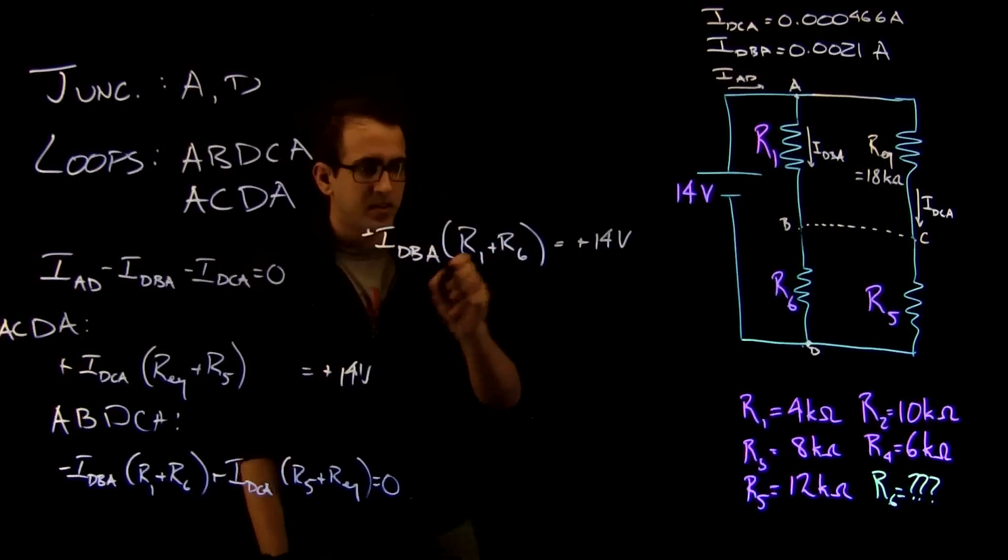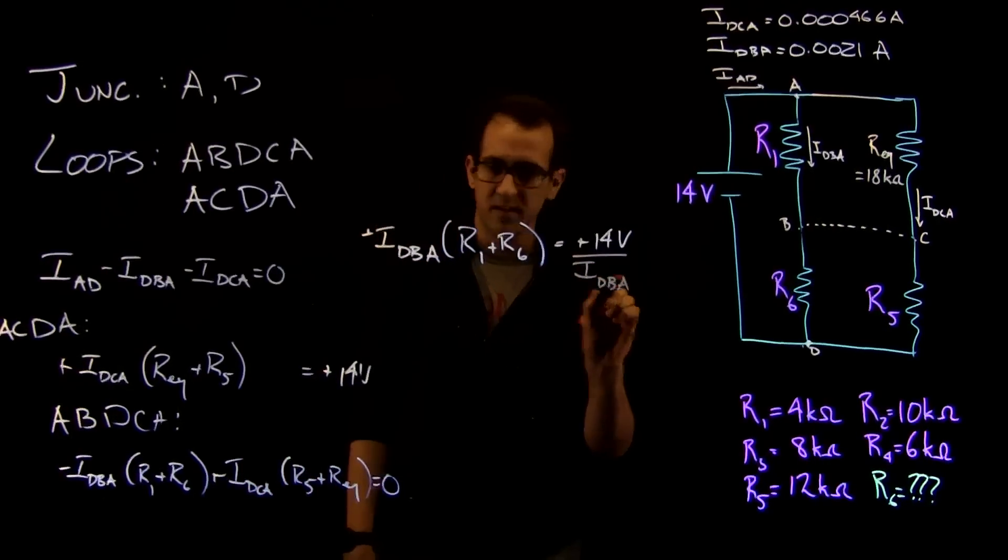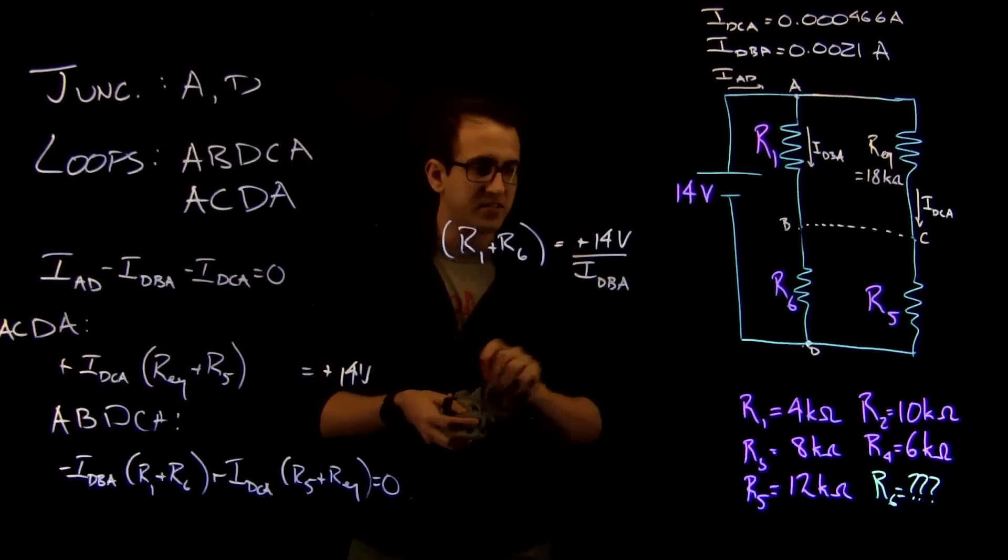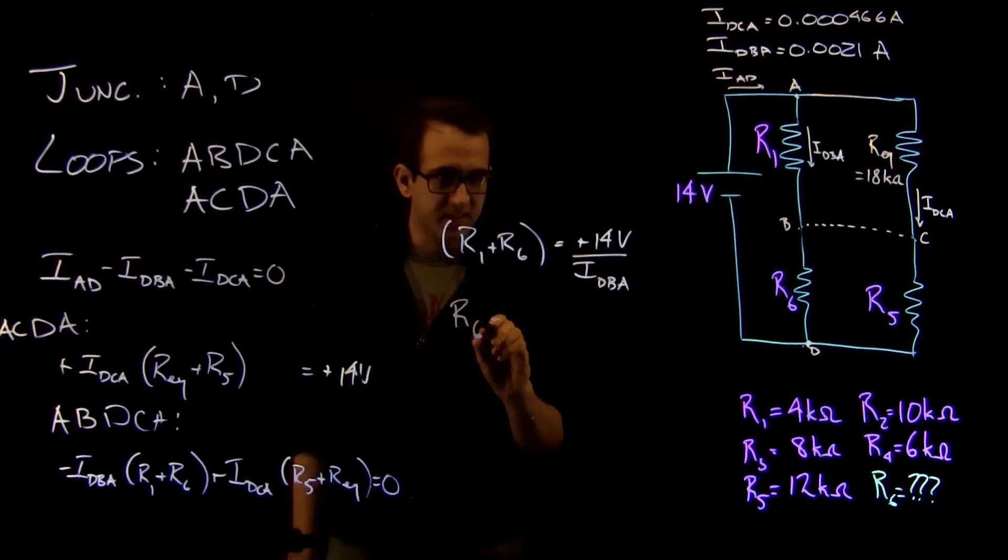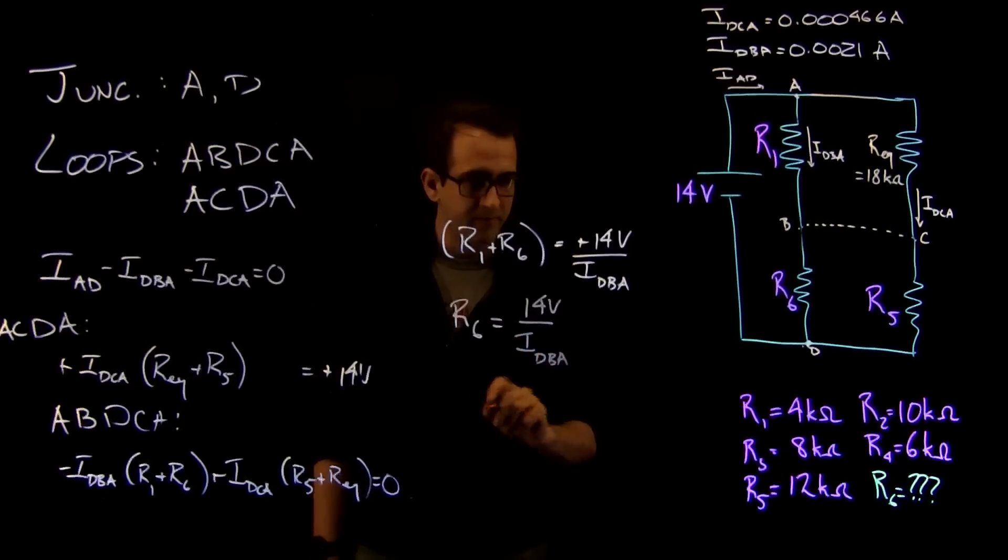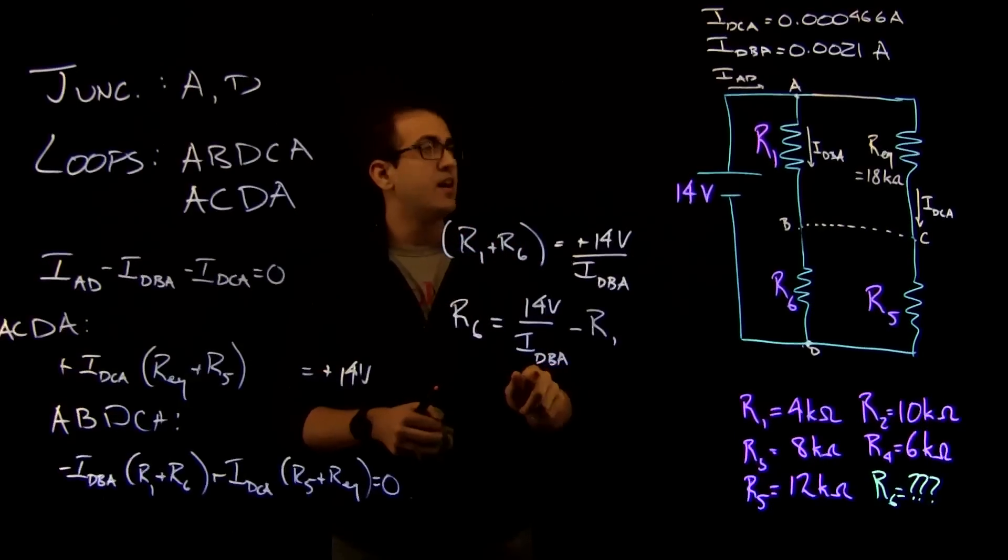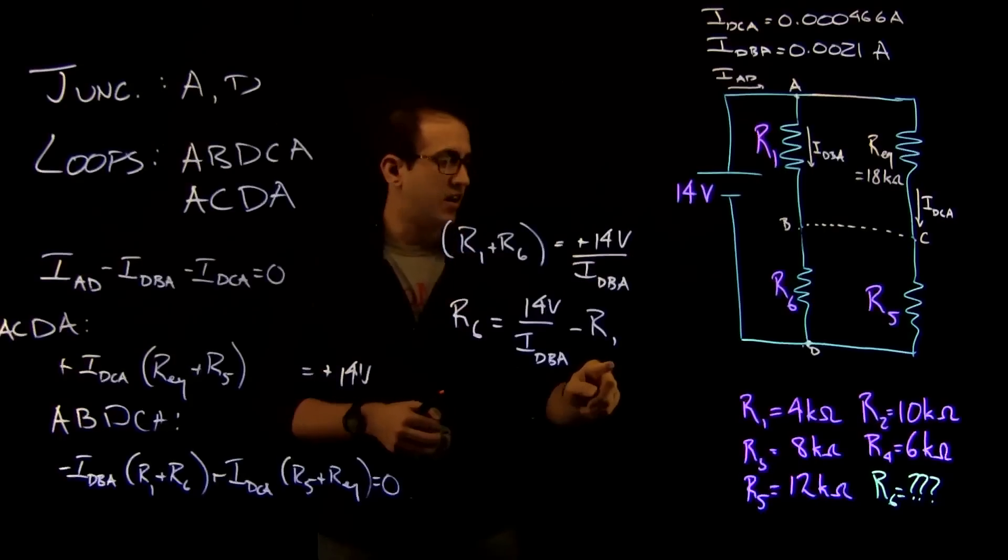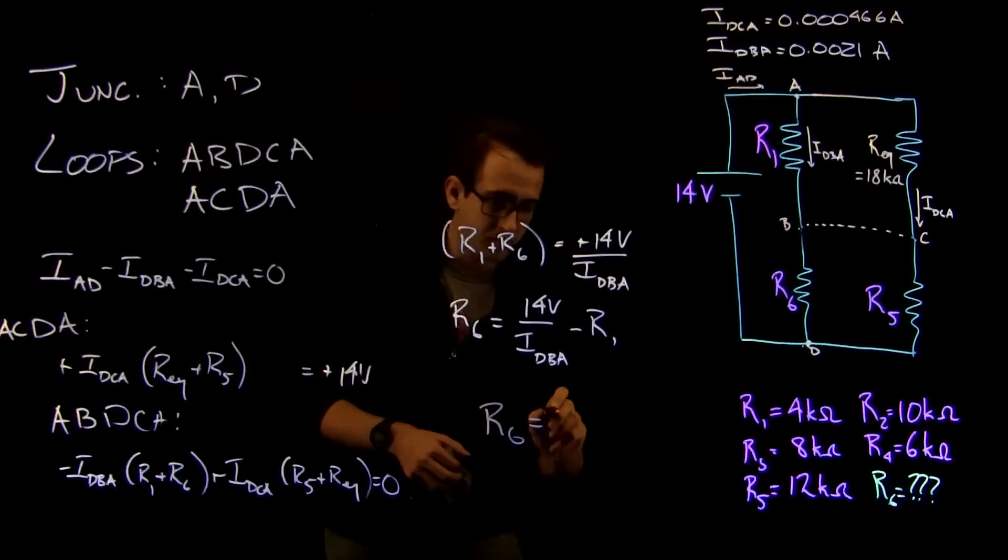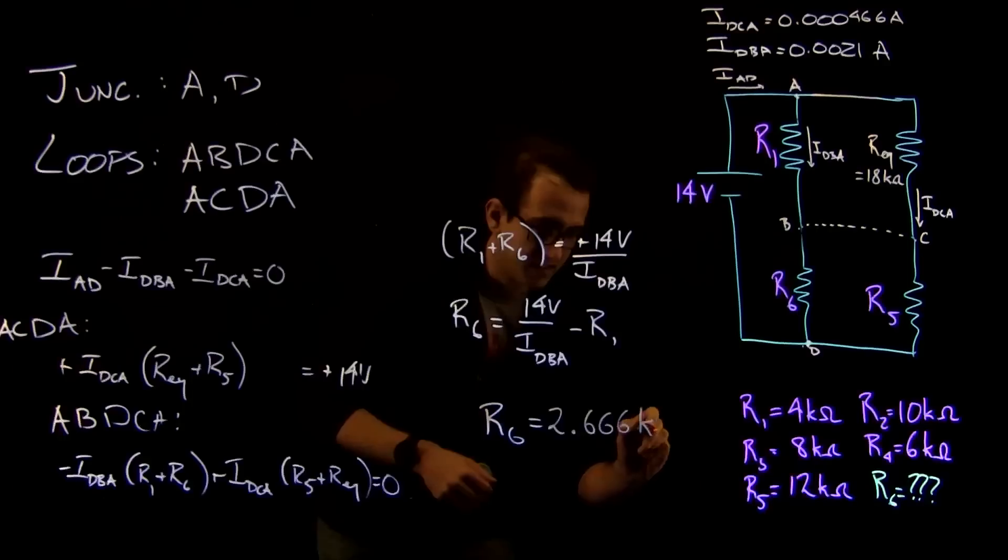And so now, what we want to know is R6. So, let's rearrange. We divide both sides by IDBA. Dividing on this side will cancel out. So, we have R1 plus R6 is 14 volts over IDBA, which shows us that R6 is just equal to 14 volts over IDBA minus R1. So, 14 volts is given to us. IDBA is 0.0021 amps. R1 is 4 kilo ohms. So we put that all together, and we find that R6 is equal to 2.666 kilo ohms.